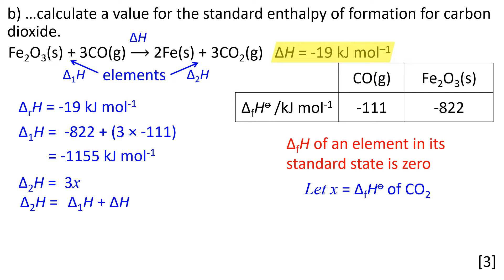Δ₂H can also be thought of in terms of Δ₁H and ΔH. That's Hess's law: the enthalpy change of a reaction is independent of the route taken. So Δ₂H equals Δ₁H plus ΔH. Substituting the numbers in: 3x = -1155 + (-19).